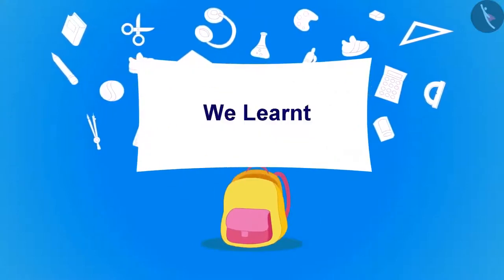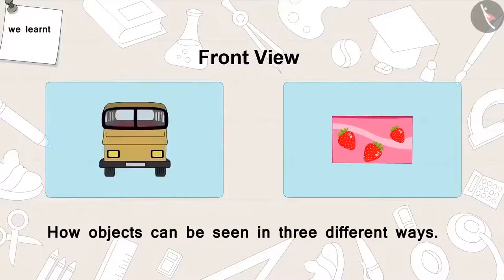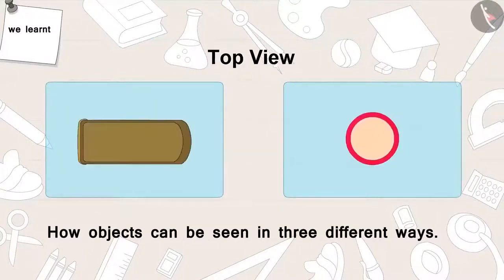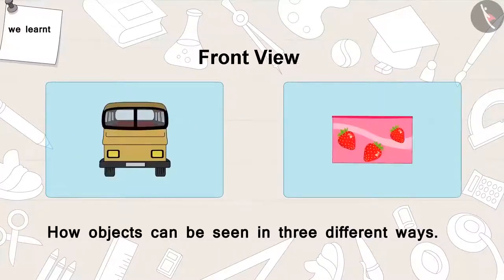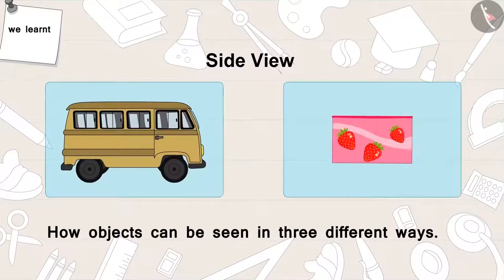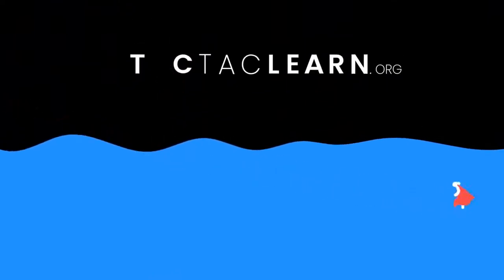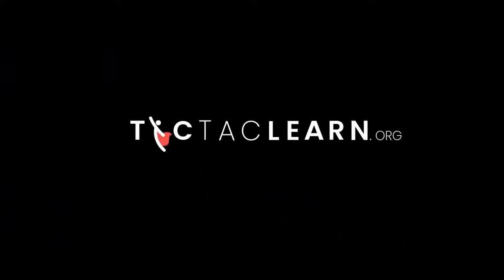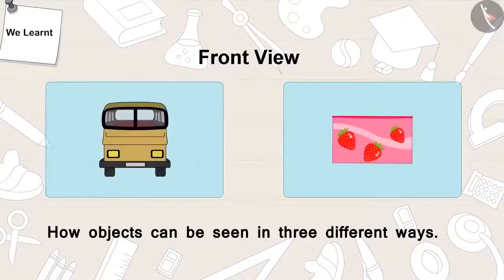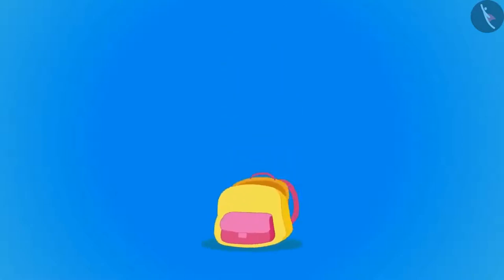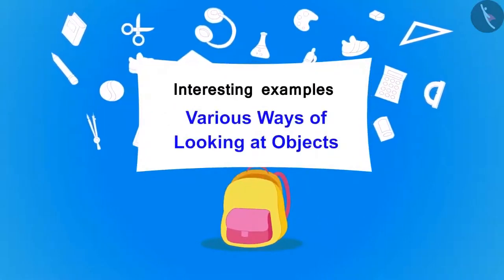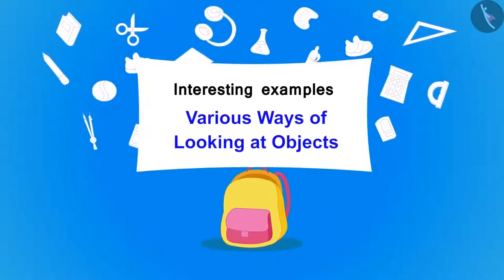Children, in this part we learnt how objects can be seen in three different ways: from above — top view; from front — front view; and the side — side view. In the next video, we will learn more about this with the help of some interesting examples. Babban is telling us about how objects can be seen in three different ways. We will learn more about this with the help of some interesting examples.